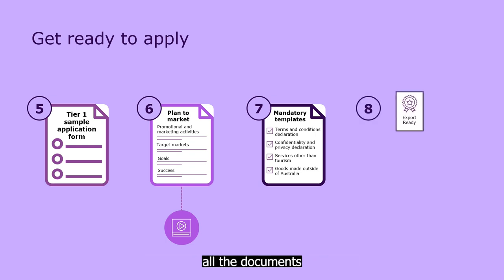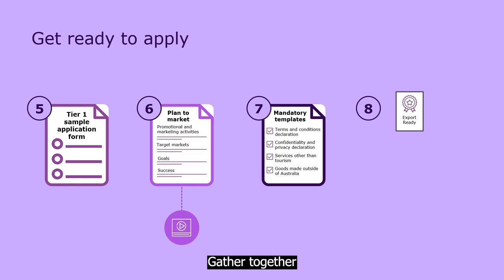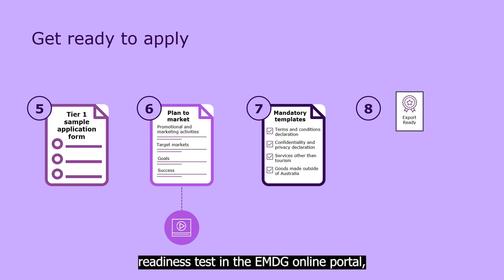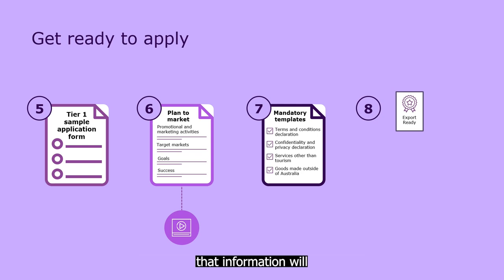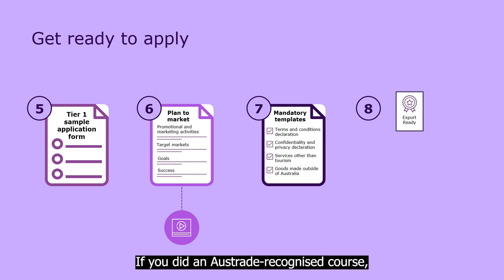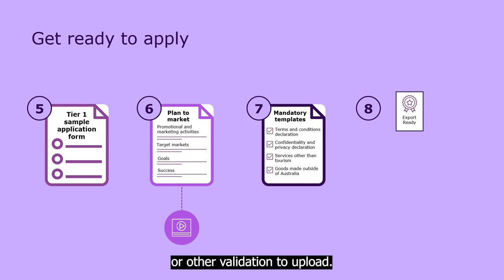Finally, it's time to prepare all the documents that confirm your eligibility. Gather together evidence that you're export ready. If you've done Austrade's export readiness test in the EMDG online portal, that information will already be in our system. If you did an Austrade recognised course, you'll need a certificate of completion or other validation to upload.